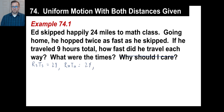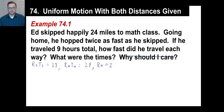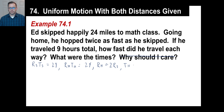He hopped twice as fast as he skipped, so the rate of hopping is two times the rate of skipping. Now we need a fourth equation. He traveled nine hours total — we can write the time of hopping plus the time of skipping equals nine. And there we go. There are four equations.